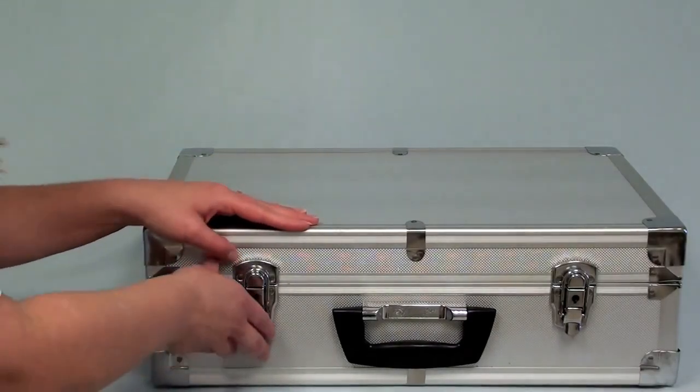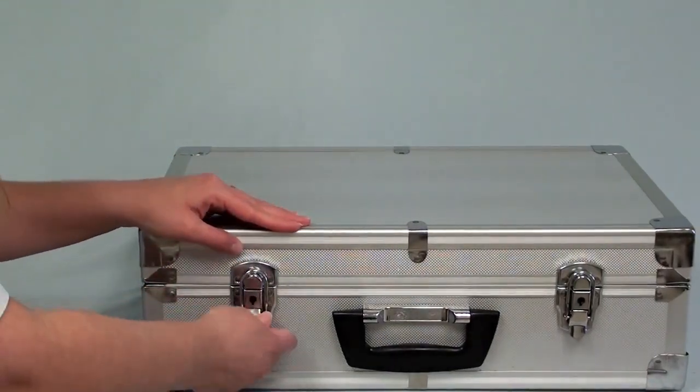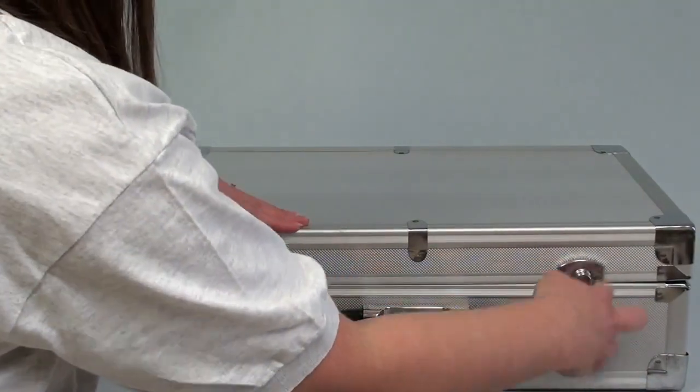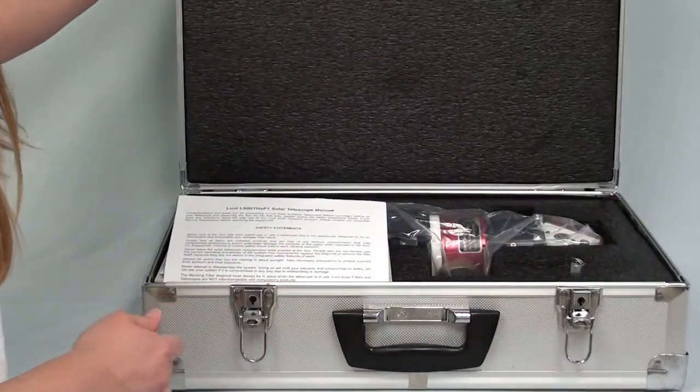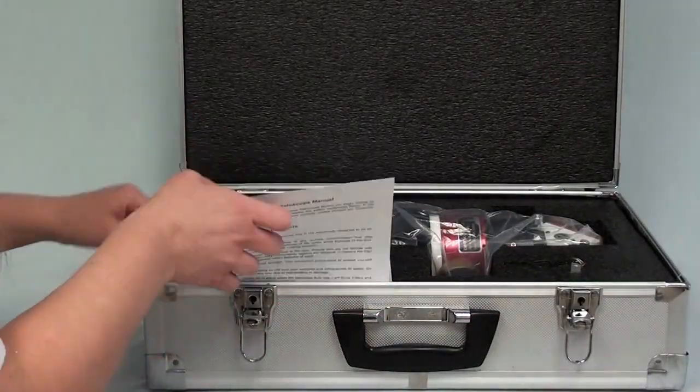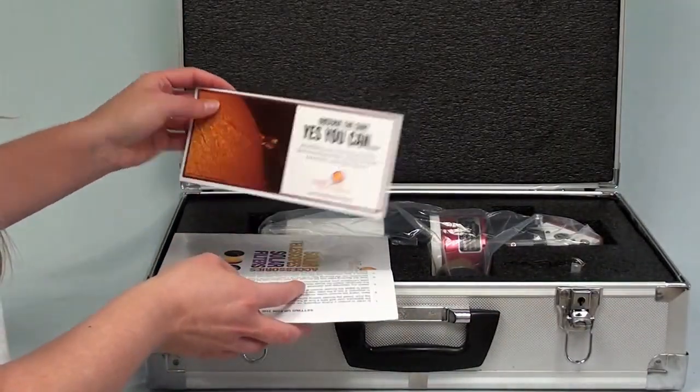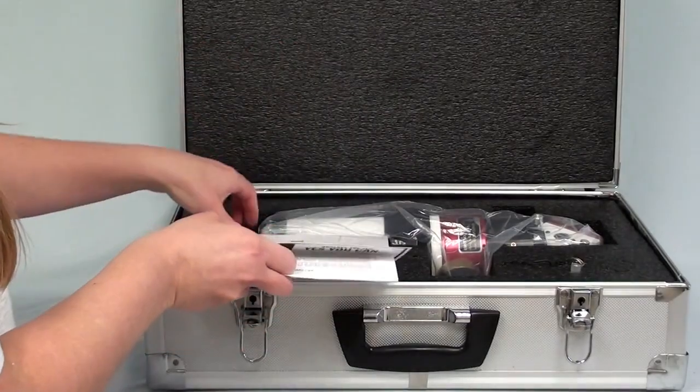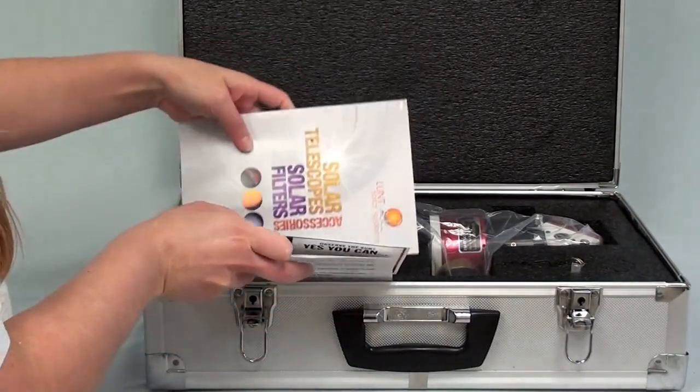Here we have the LS60-THA-PT and its case as you would receive it. Inside you'll find your instruction sheet, information on how to warranty your product, and a brochure of our other solar products.